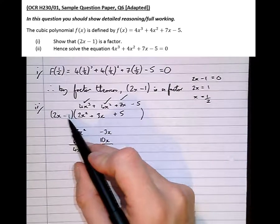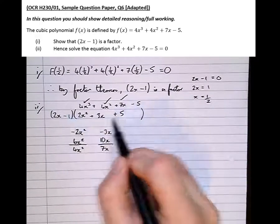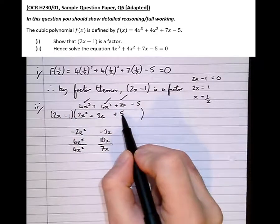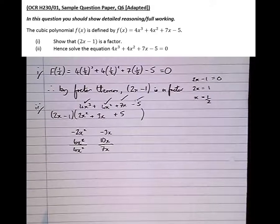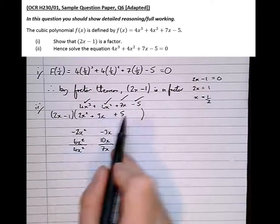Then finally, an unwanted consequence of that was minus 1 times 5, which is minus 5. However, I need minus 5, so we're done. We're fully factorized. So now we know that 4x cubed plus 4x squared plus 7x minus 5 is 2x minus 1 times this quadratic part. So this here is what we now need to solve in order to get the other solutions.